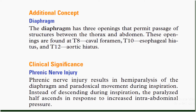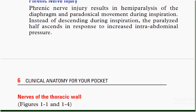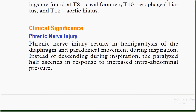The diaphragm has three openings that permit passage of structures between the thorax and abdomen. These openings are found at T8 (caval foramen), T10 (esophageal hiatus), and T12 (aortic hiatus), as seen in the diagram.